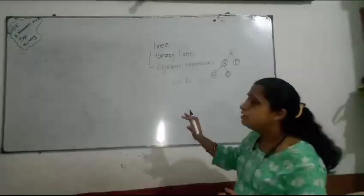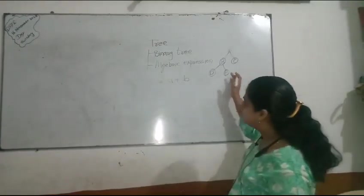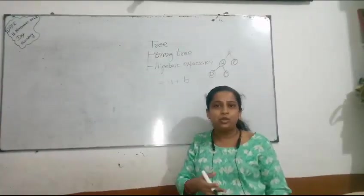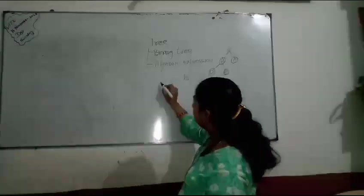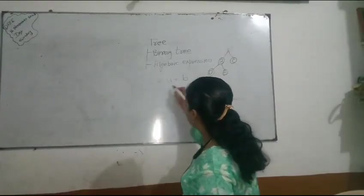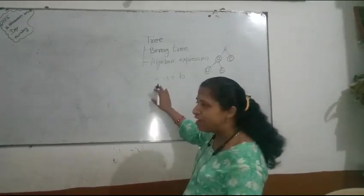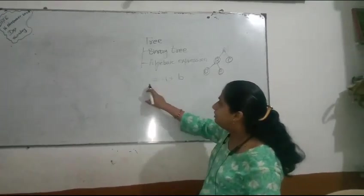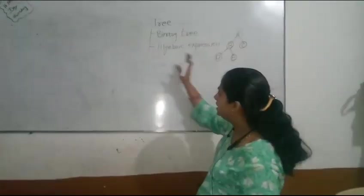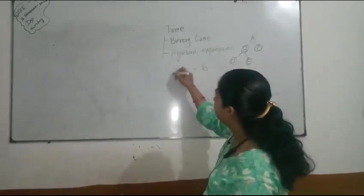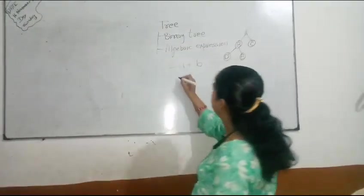It is a very simple expression. To convert it into binary expression, we must divide it into two parts. Suppose this is my LHS and this is my RHS. We will divide it into LHS and RHS. We will get this symbol, that is the equals symbol.